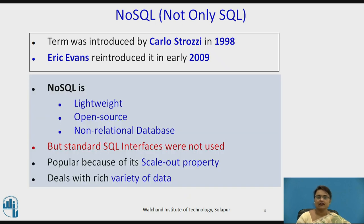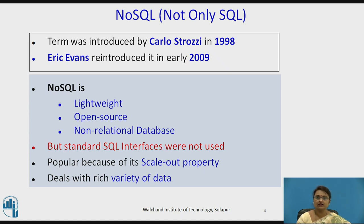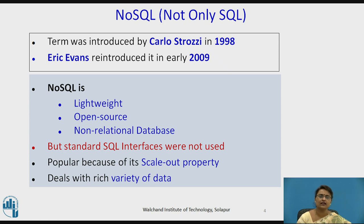NoSQL supports lightweight operations. It is open source and a non-relational database — very importantly, it is not a traditional RDBMS. Standard SQL interfaces are not used in NoSQL. It is popular because it supports scale-out properties and deals with a rich variety of data — structured, semi-structured, and unstructured — all supported by NoSQL.